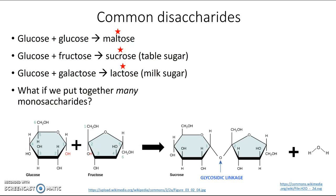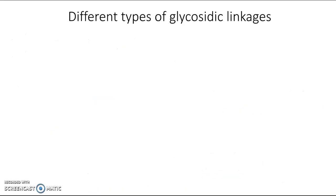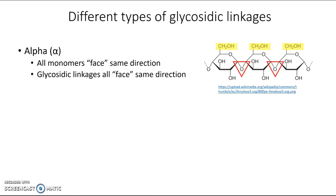If we put together many, many monosaccharides, we get a polysaccharide — something like this, with lots of glycosidic linkages between monosaccharides. There are two types of glycosidic linkages you need to know. The first is called alpha. You can recognize alpha glycosidic linkages because all the monomers face the same direction — all the glucoses have their CH₂OH facing the same way, and the linkages between monosaccharides also face the same direction, appearing to face downwards.